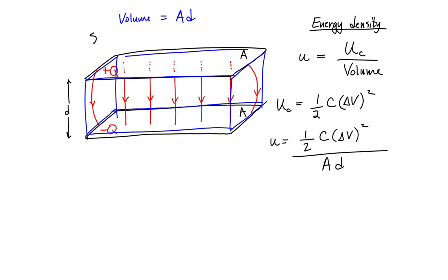Our goal, remember, is to show that this energy density equals one-half times the permittivity of free space times the magnitude of the electric field squared. So somehow we're going to have to convert the potential difference into the electric field, and express the capacitance in terms of the other quantities, because what we should have left is only the one-half — which we already have — the permittivity of free space, and the electric field.